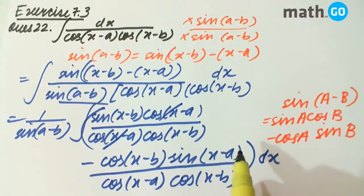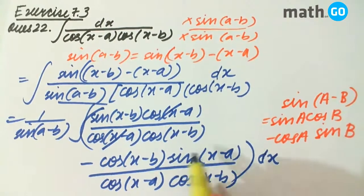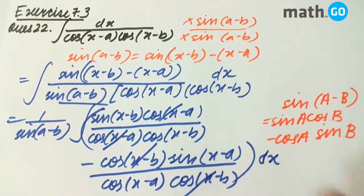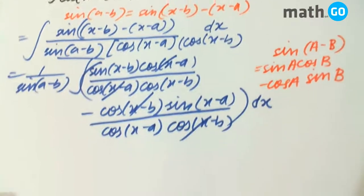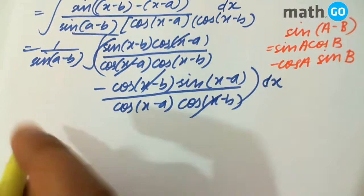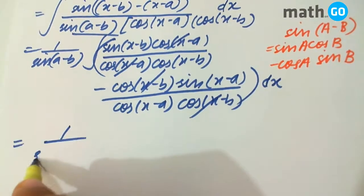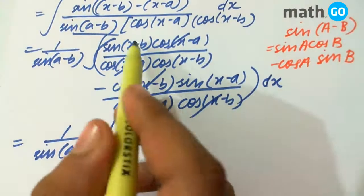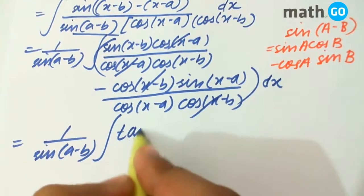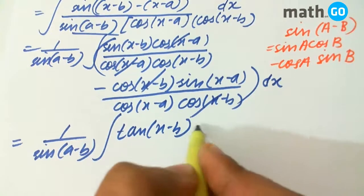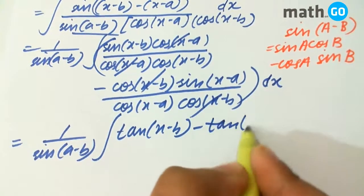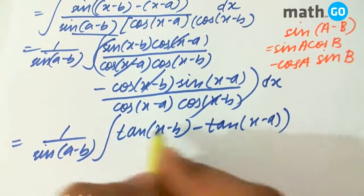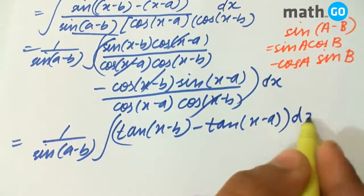Here we see that these terms get cancelled, giving us tan(x-b) minus tan(x-a). This completes the integral with dx.